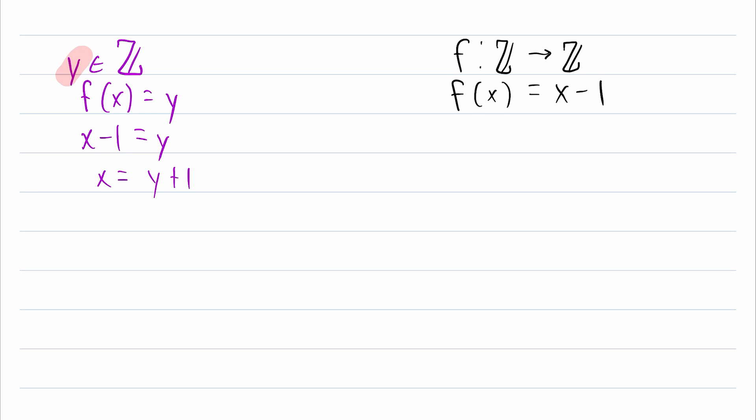So this means if we're given the element y from the codomain, the element y plus 1 in the domain maps to y. But is y plus 1 actually in the domain? Is y plus 1 an integer? We know that it is because y is an integer, 1 is an integer, and the integers are closed under addition. So y plus 1 will always be an integer.